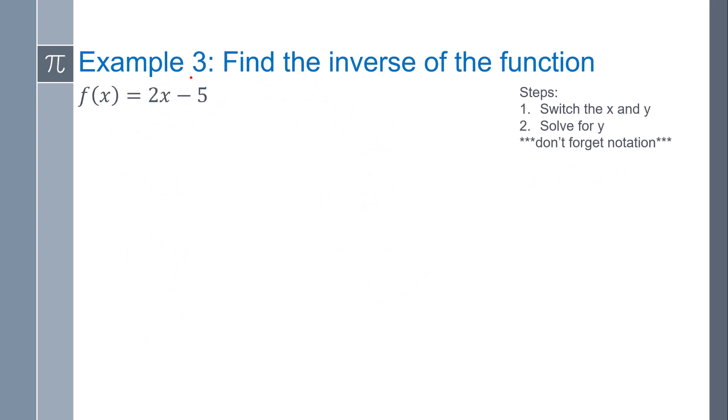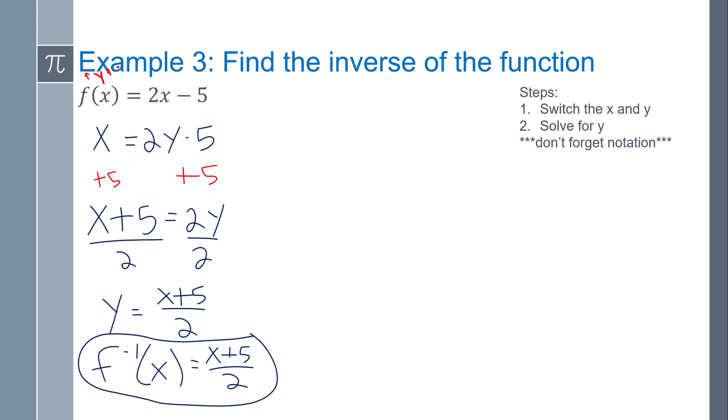Now how do we find the inverse? There's a simple process here. The first thing is we switch the x and y, and then you solve for y. So in this instance, I switch the x and y. Remember this idea of f of x, that's the same thing as y. So we switch the x and y. Then I just need to get y by itself. So add 5 to both sides, divide both sides by 2. There's my inverse. Now if it's a function, I can use this special notation, f inverse of x. And so that's my answer.